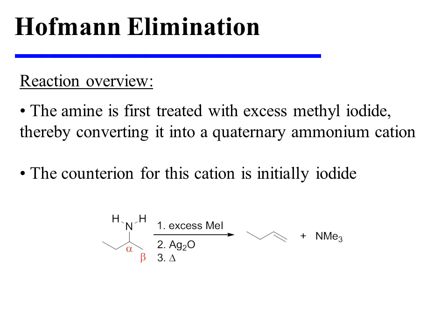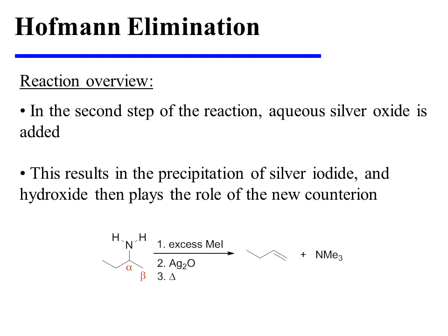The amine is first treated with excess methyl iodide, thereby converting it to a quaternary ammonium cation. The counter-ion for this cation is initially iodide. In the second step of the reaction, aqueous silver oxide is added, and this results in the precipitation of silver iodide, with hydroxide then playing the role of the new counter-ion.